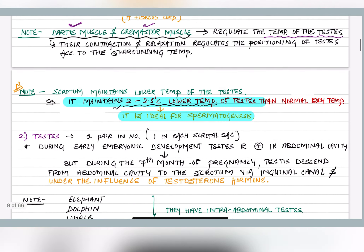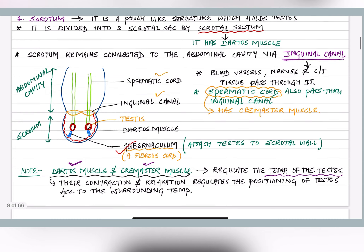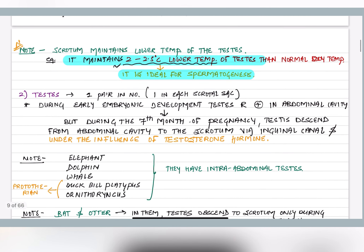Based on temperature, the scrotum ascends or descends from the abdominal cavity through contraction and relaxation of muscles. In winters the scrotum size becomes small; in summers it becomes slightly larger. An important NEET question: the scrotum is connected to the abdominal cavity via the inguinal canal. Questions have been asked about how much lower the temperature is maintained and why — that is, for spermatogenesis.